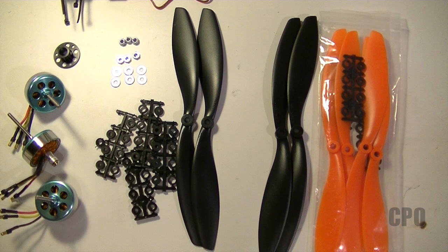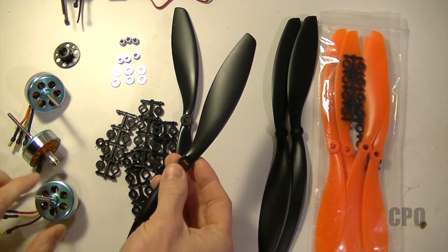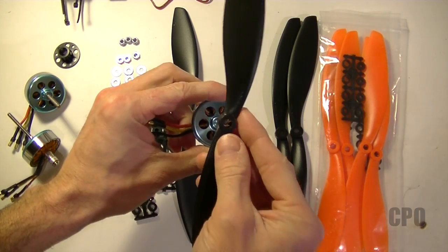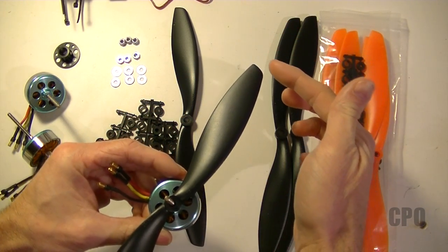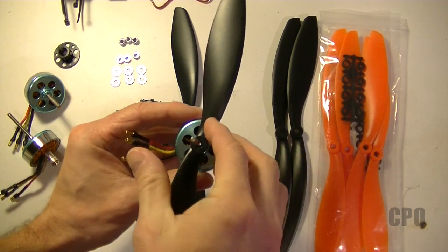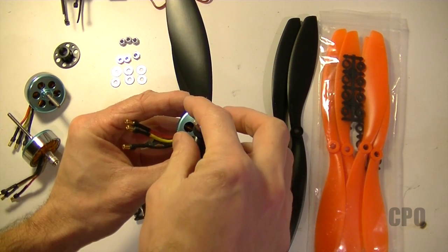These are 10 by 4.5 slow fly props from Hobby King. I got two packs. One pack is black and then the other pack is orange. Each package contains two standard rotation and then reverse rotation props, and we'll be using some of each of those for this build. So when you mount the prop on the motor with the numbers facing up, the swoop at the end will kind of give you an indication of which direction it's designed to turn. And this one would turn clockwise as seen from the top.